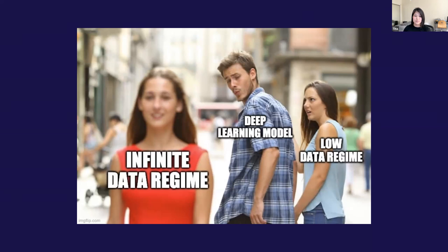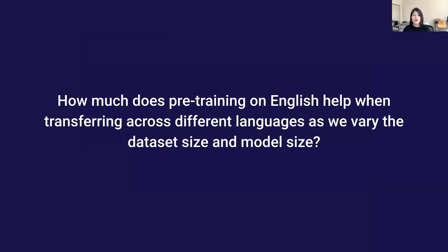Before the scholars program I was a machine learning engineer and I saw firsthand how costly it is in both time and money to get good quality data. Building upon the work from scaling laws for transfer, my experiments try to answer the question: how much does pre-training actually help when we're transferring across different languages — Chinese, Spanish, and German — and what does that look like as we vary the dataset size and model size?